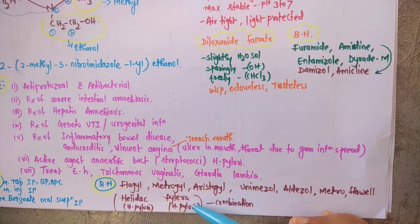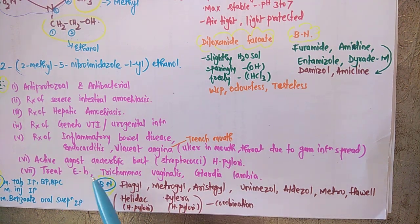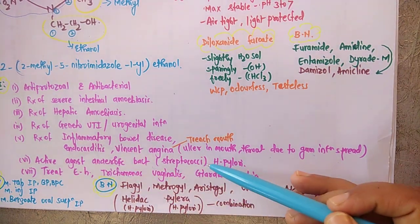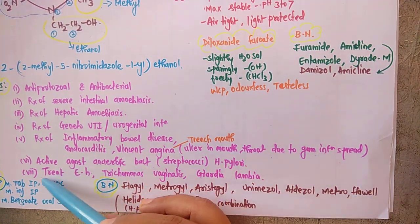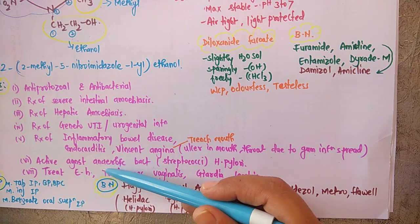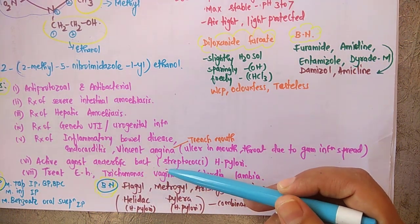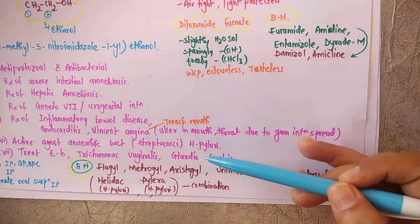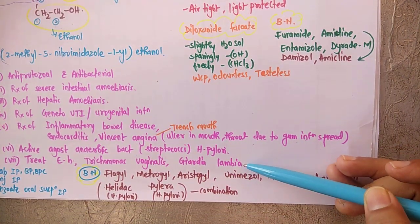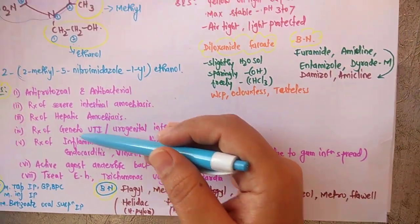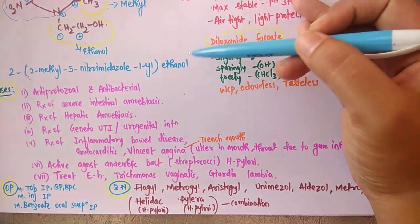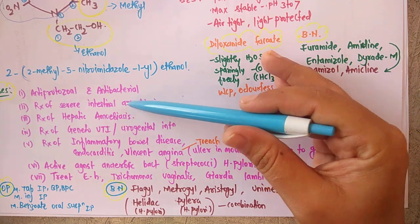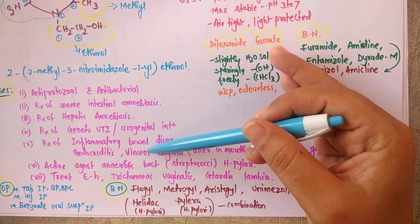Active against anaerobic bacteria, streptococci and H. pylori. Also to treat Entamoeba histolytica, for the treatment of Trichomonas vaginalis infections and Giardia lamblia infections. So these are the uses of nitroimidazole.